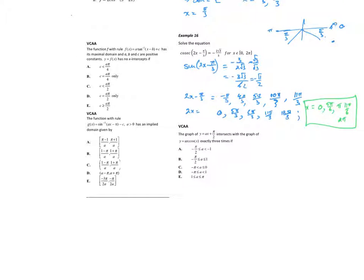Now let's look at the last one: the graph of y = ax + π/2 intersects the graph of cos⁻¹(x) three times. The domain of cos⁻¹(x) runs from positive 1 to negative 1, range 0 to π. This is really a gradient question — we need to find what values of 'a' allow three intersections.